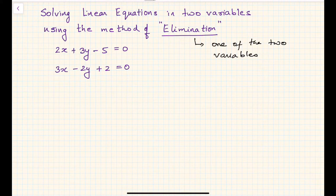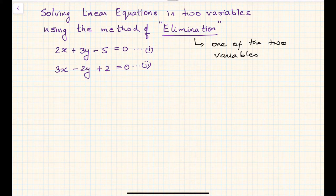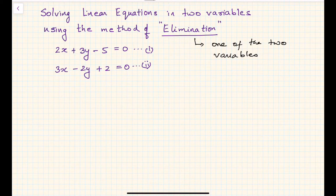Here is equation number one and this is equation number two. First of all, we have to decide between x and y — which variable we want to eliminate. You can pick any one. Let's say I want to eliminate x. To eliminate x, I have to take note of the coefficients of x in both equations. Here the coefficient is 2 and here it is 3.